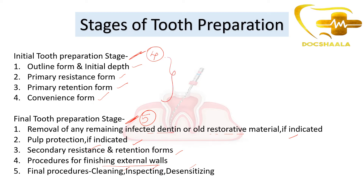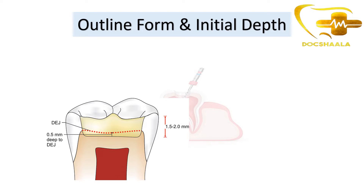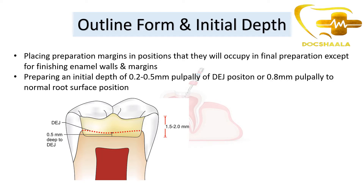In this video we will look at just the initial tooth preparation stages, because these were the only options given in the question. Coming to outline form and initial depth — it is nothing but placing preparation margins in positions that they will occupy in the final preparation. The position of the margins is the same as they occupy in the final preparation, except for finishing enamel walls and margins.